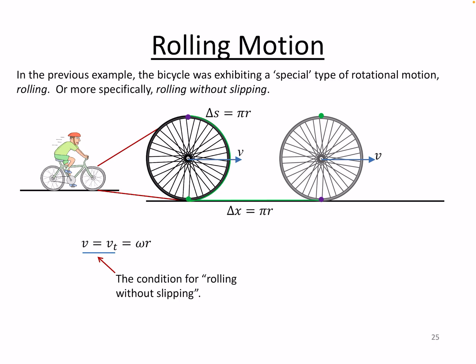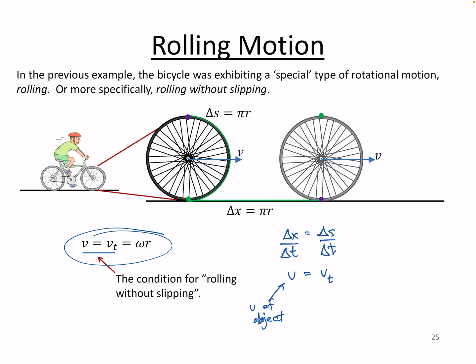That allows us to derive the velocity relationship. How do we get it? We divide both sides by delta t. On one side, that gives you the velocity of the object as it moves forward. On the other side, this is our expression for the tangential velocity of the wheel at that point — that would be v sub t.